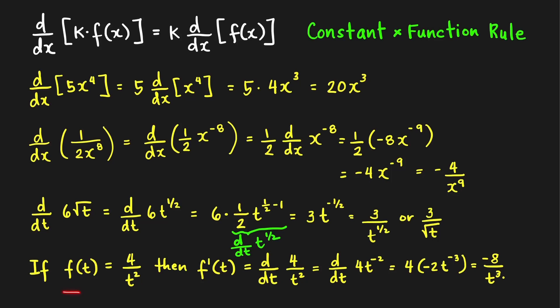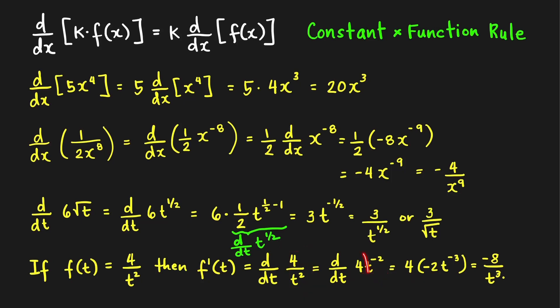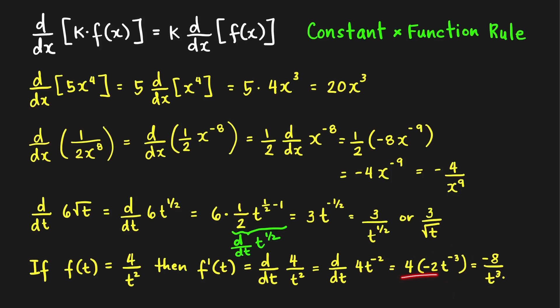Last problem: if f of t equals 4 over t squared, then using prime notation, f prime of t is the derivative of 4 over t squared with respect to t. We write this as 4t raised to negative 2 and apply the constant times function rule: copy the constant 4 and multiply it by the derivative of t raised to negative 2. Bringing down the power negative 2 and subtracting 1 gives negative 3. Then 4 times negative 2 equals negative 8, and making the power positive gives f prime of t equals negative 8 over t cubed.